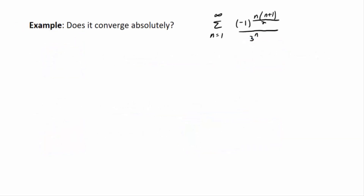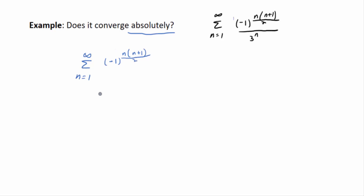Let's start with an example: does it converge absolutely? The series sum from n=1 to infinity of (-1)^(n(n+1)/2) divided by 3^n. You might think that's horrible to deal with, but if you take the absolute value of aₙ, to show absolute convergence we take the absolute value of what's inside — the (-1) to that exponent divided by 3^n — and it simplifies greatly.